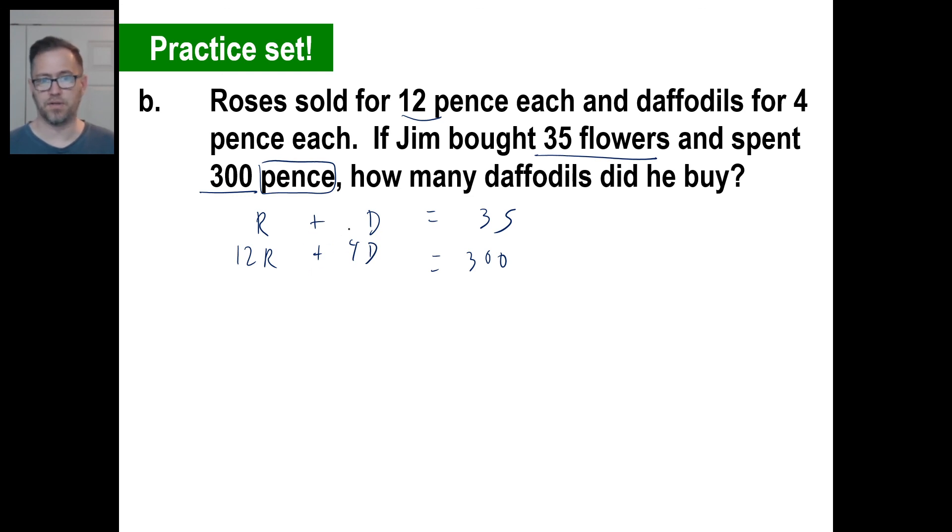So you can, again, you can do substitution if you want, or you can just go ahead and multiply. I'll just multiply by four because that seems a little simpler. So four times the daffodils, four times the roses, 35 times four is 140. I'm going to subtract all the way across. Gone.